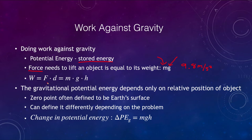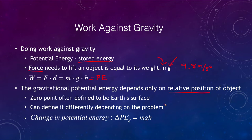The work is equal to the force times the distance, and that force is just m times g. So the potential energy is given by m times g times h — the mass times the gravitational acceleration times the height through which the object is lifted. The gravitational potential energy depends only on the relative positions of the objects, so we can define our own zero point, which can be convenient for the specific problem.